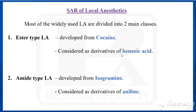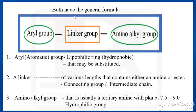Now we are going to see the SAR of local anesthetics. Most local anesthetics are divided into two main classes: one is ester type local anesthetics and another is amide type local anesthetics. Ester type local anesthetics are developed from cocaine and are considered derivatives of benzoic acid, whereas amide type local anesthetics are developed from isogrammin and are considered derivatives of aniline. Both have the same general formula with three parts.